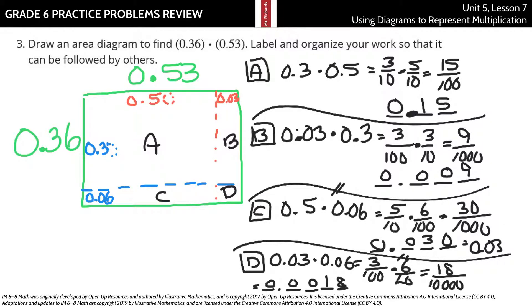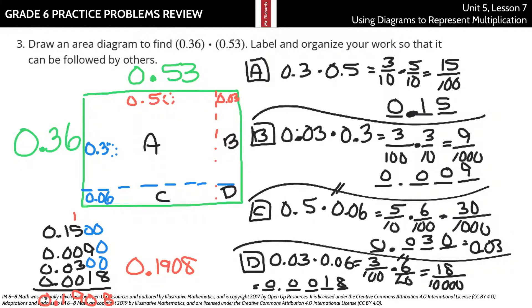So to get the entire area of the rectangle now, we need to add those four numbers. We have our 0.15, we have our 0.009, we have our 0.03, and we have our 0.0018. And if we put in zeros here to help line things up, we can now add these together. 8, 9 plus 1 is 10, 1 plus 5 plus 3 is 9, and we just have the 1 and a decimal point 0. So 0.1908 or 1,908 ten-thousandths square units.